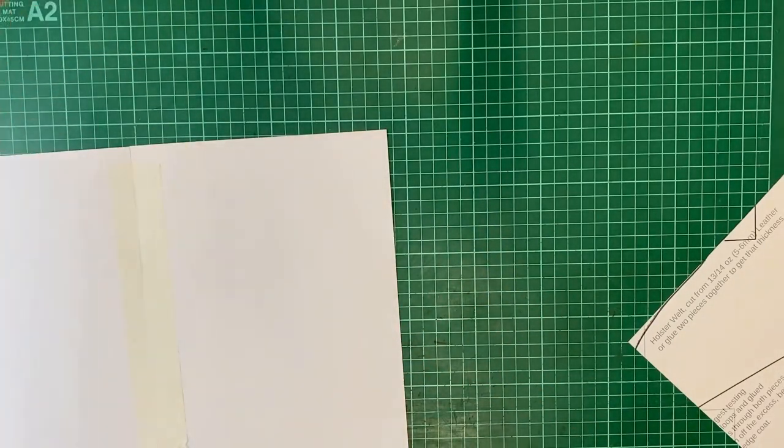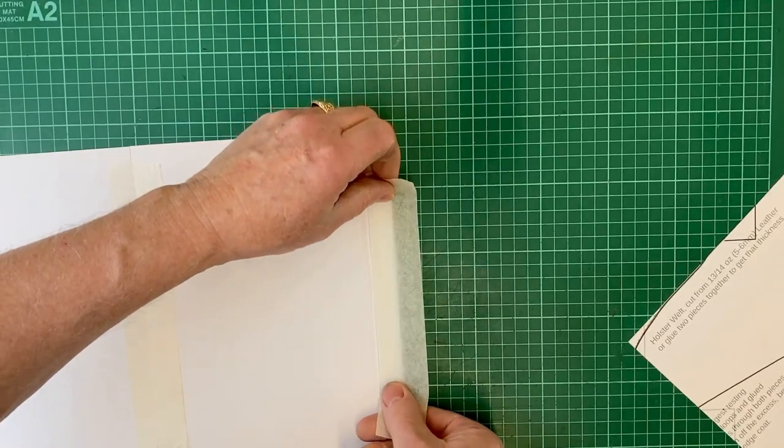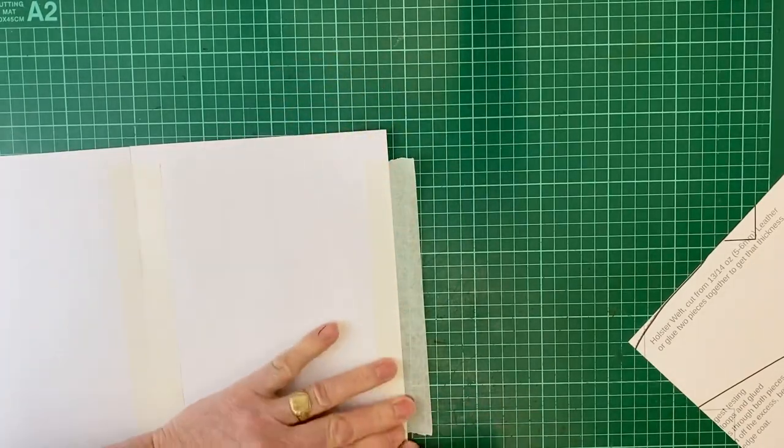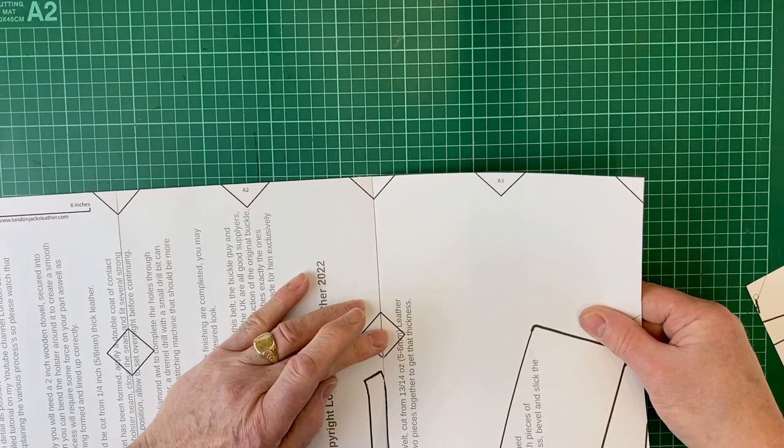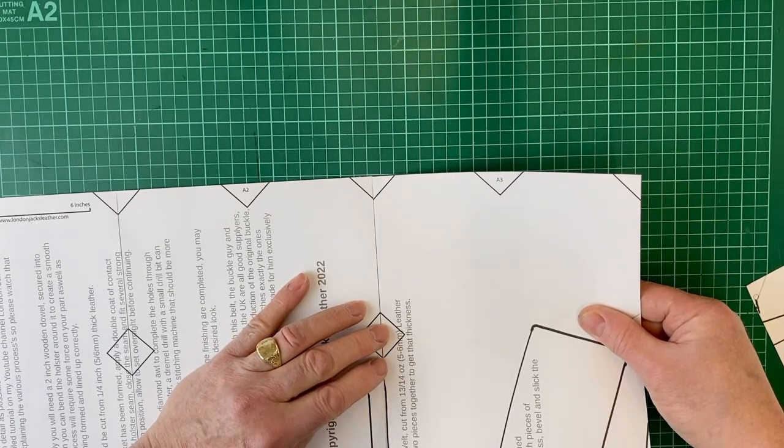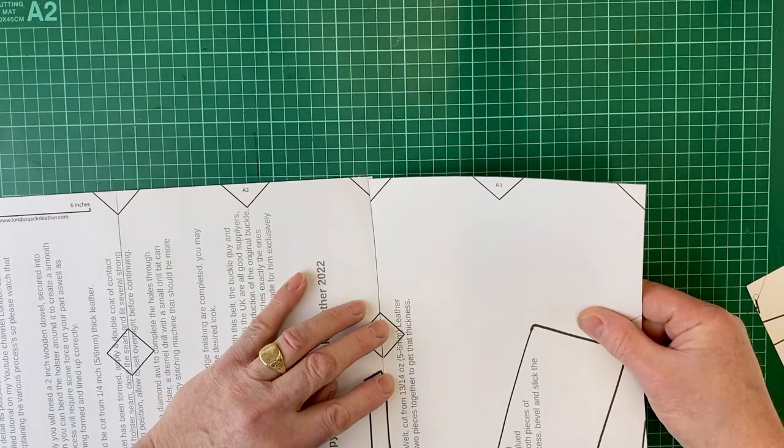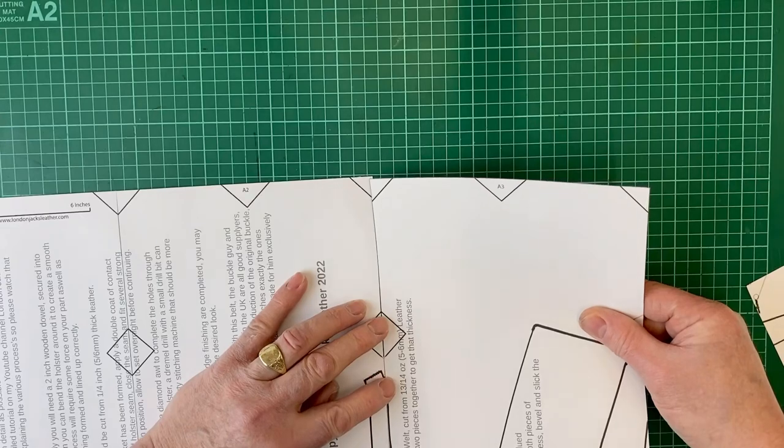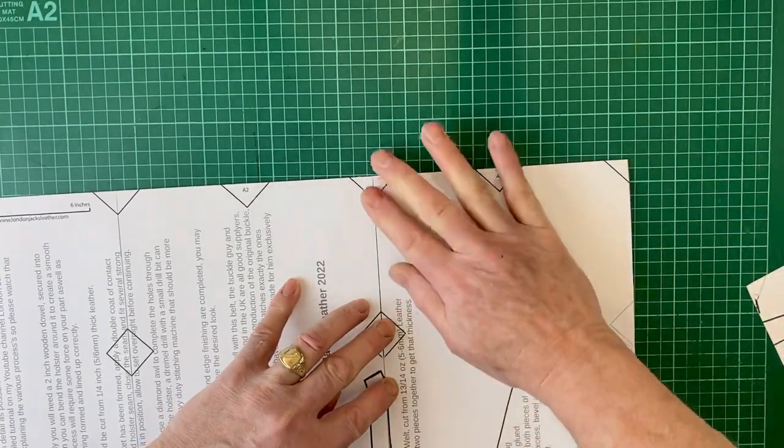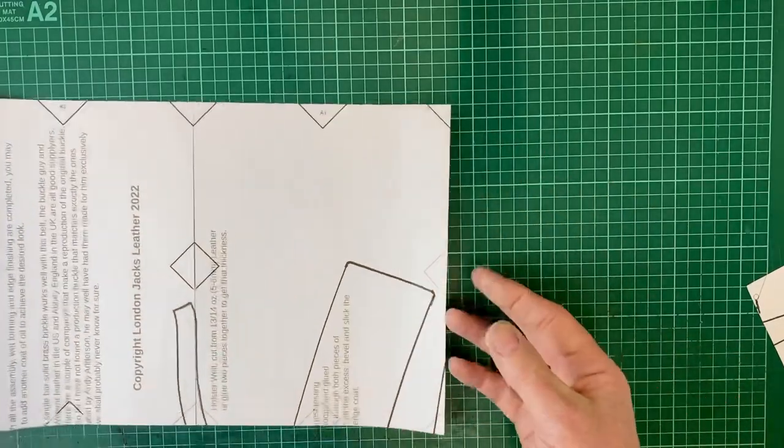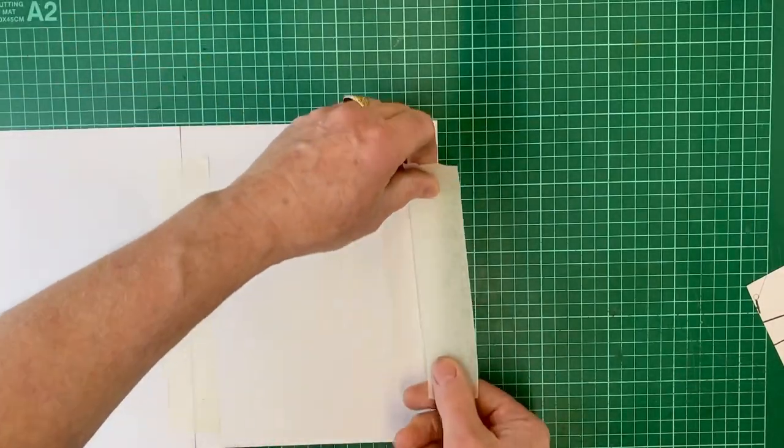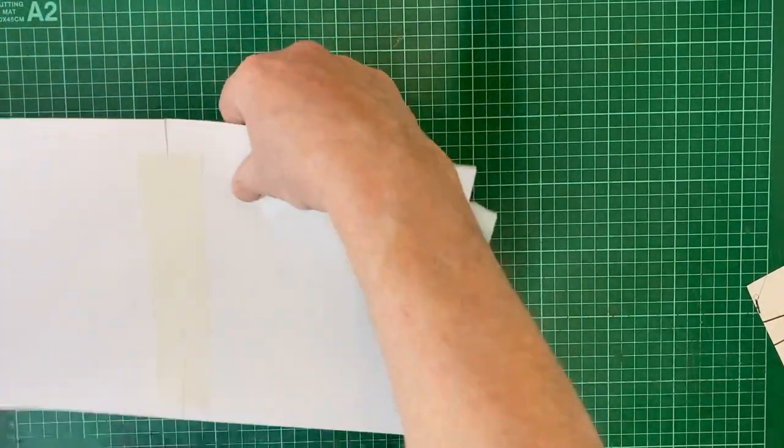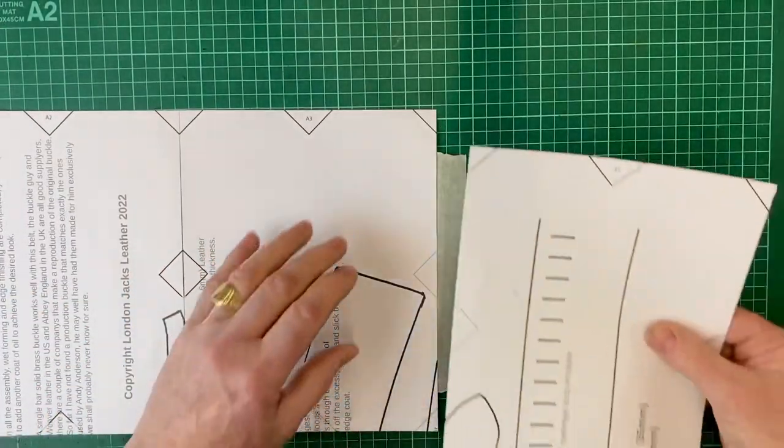Next piece, tape on the back, A3. Get the registration marks lined up perfectly, and so on and so forth until we've got the whole pattern assembled.